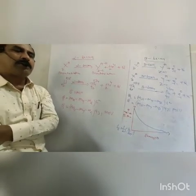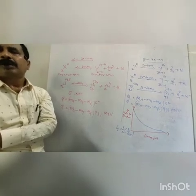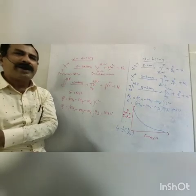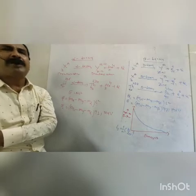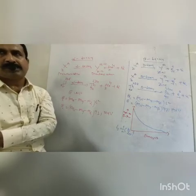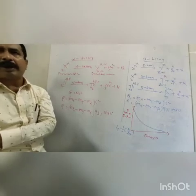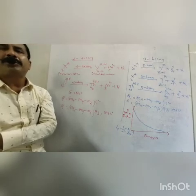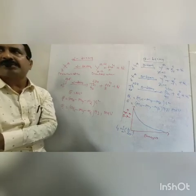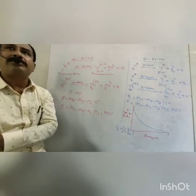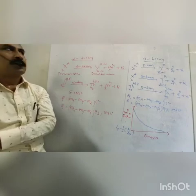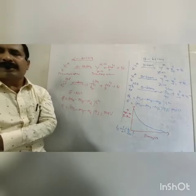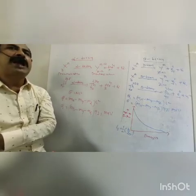Alpha, beta and gamma rays are emitted from the nucleus of the radioactive element. This original element is called the parent atom. After emission of alpha, beta and gamma rays, the parent atom changes into a new element because its mass number and atomic number are changed. That is why this new element is called the daughter atom. This daughter atom is also disintegrated until it reaches a stable element like lead.